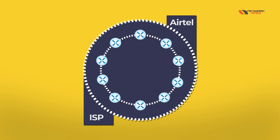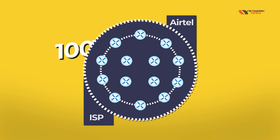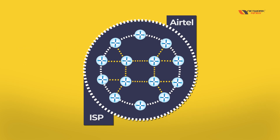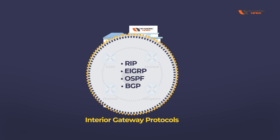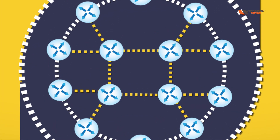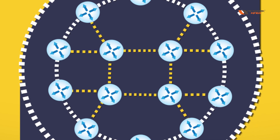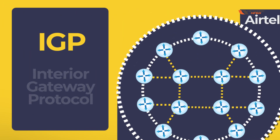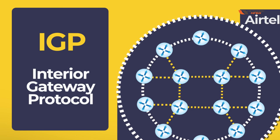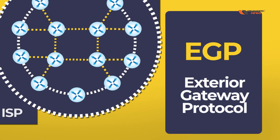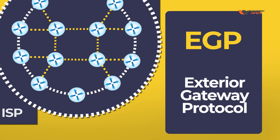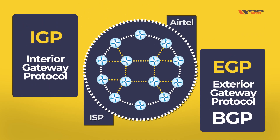Now, Atel as a service provider has many routers — maybe 10,000 or more. If we are running interior gateway protocols inside Networkings, what protocol do we run inside Atel? IGP stands for Interior Gateway Protocol, and there is another category called EGP — Exterior Gateway Protocol. The only protocol under EGP is BGP.